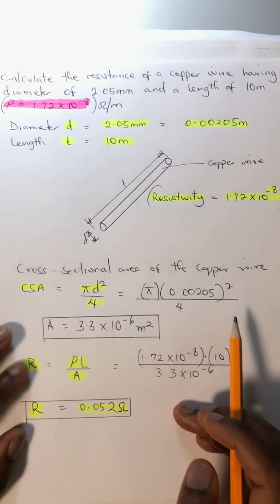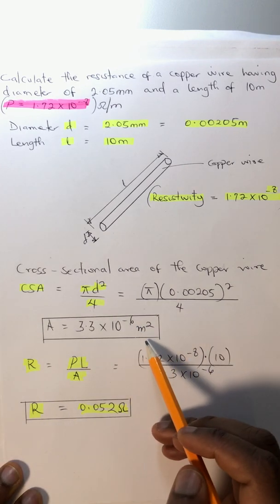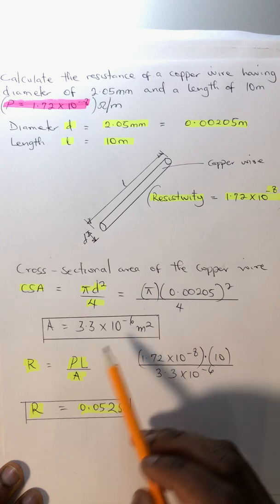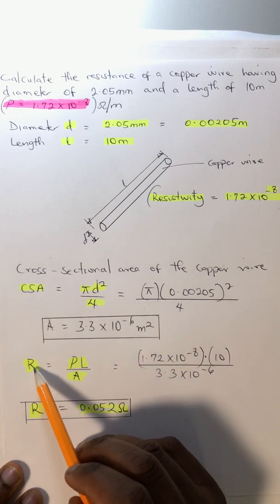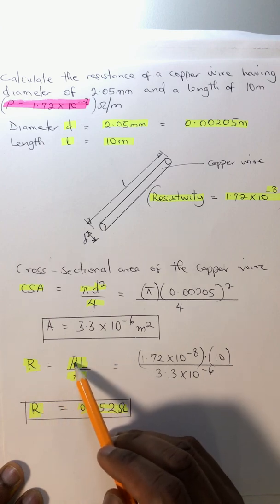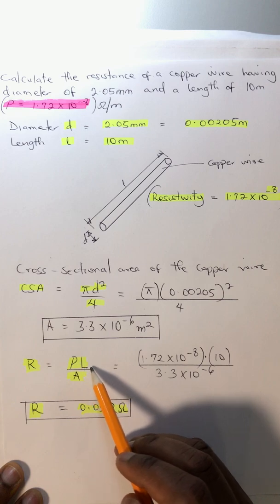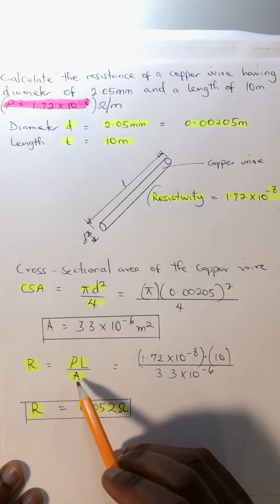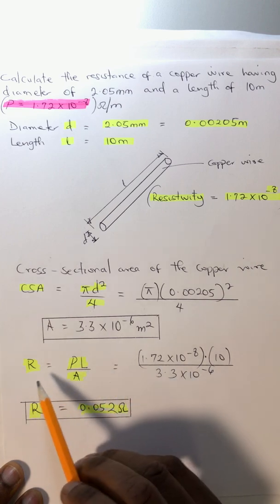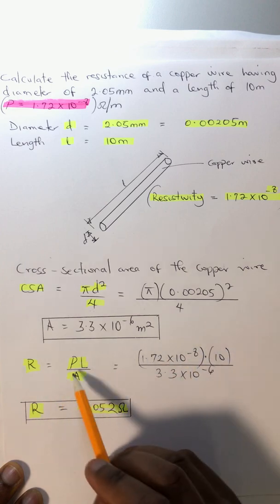Now we can find the resistance using the formula: R equals resistivity times the length of the copper wire all over the area. We can find our resistance by inputting all the given values.